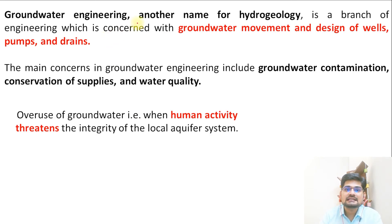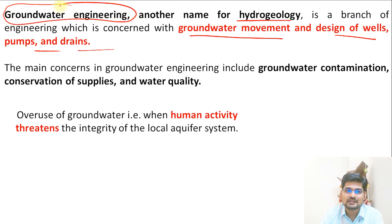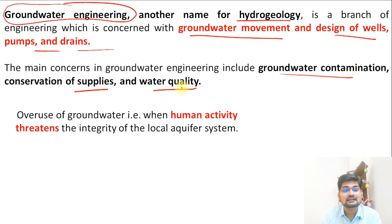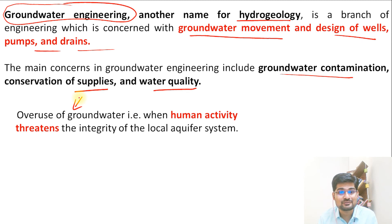Groundwater engineering, another name for hydrogeology, is a branch of engineering concerned with groundwater movement and the design of wells, pumps and drains. The main concerns of groundwater engineering include groundwater contamination, conservation of supplies and water quality. Overuse of groundwater and increasing pollution due to human activity threatens the entire aquifer system, which is very important for our sustenance on earth.